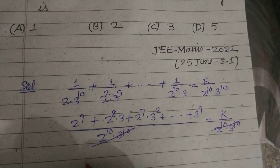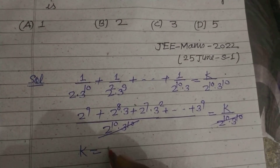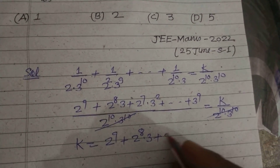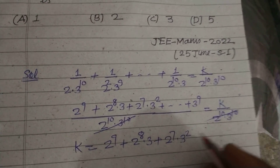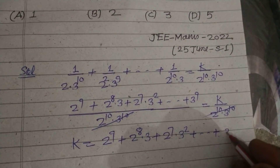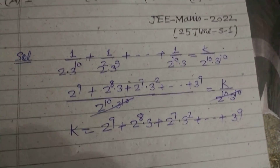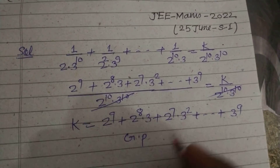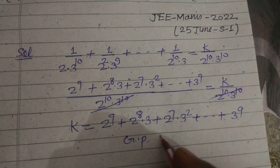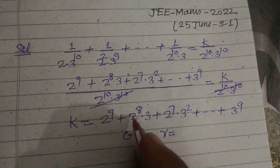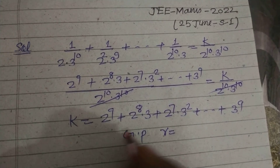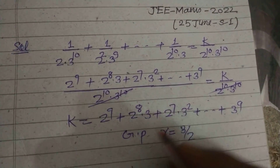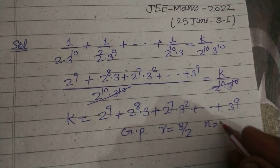Cancelling the denominator, we get k = 2^9 + 2^8 · 3 + 2^7 · 3^2 + ... + 3^9. We observe this is a geometric progression with common ratio r = (2^8 · 3)/(2^9) = 3/2, and number of terms n = 10.